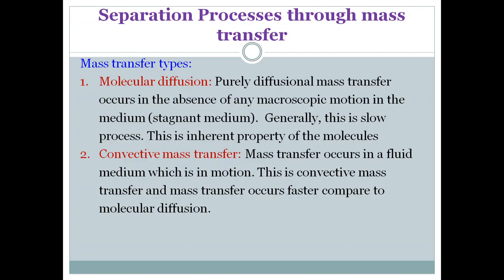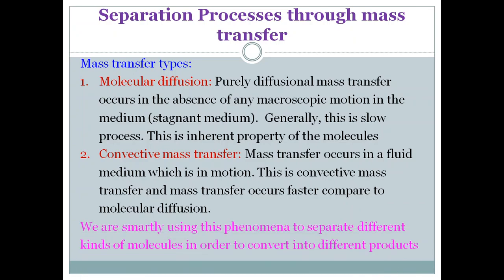Now the question comes: we have two types of mass transfer — molecular and convective. These are fundamental properties of the molecules in the mass transfer process. How will we use these two phenomena in such a way that we can separate the molecules? Let's take another example to understand this.